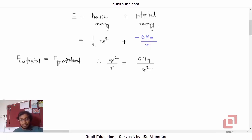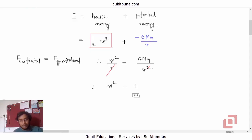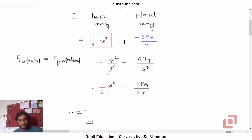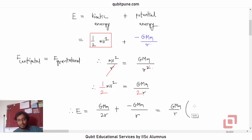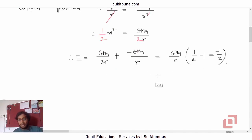We are trying to find a replacement for the kinetic energy term. Cancelling r, we get mv squared equal to GMm divided by r. Dividing by 2 gives the kinetic energy as GMm upon 2r. So the total energy becomes GMm upon 2r minus GMm upon r. Taking GMm upon r as common, we get the factor one-half minus one, giving us negative one-half. Therefore, the total energy e equals negative GMm upon 2r.